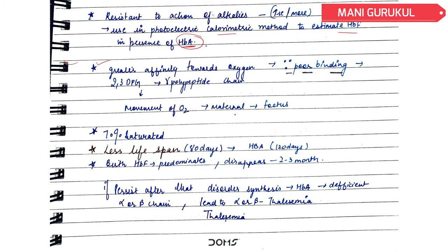Fetal Hemoglobin has more affinity towards oxygen. Why? Because of poor binding at 2,3-DPG — the Gamma polypeptide chain has a very poor binding site for 2,3-DPG. This facilitates the movement of oxygen from maternal blood to the fetus, so oxygen transfer occurs from mother to fetus. It is 70% saturated. Normal hemoglobin lifespan is 120 days, but in fetal hemoglobin their lifespan decreases to 80 days.